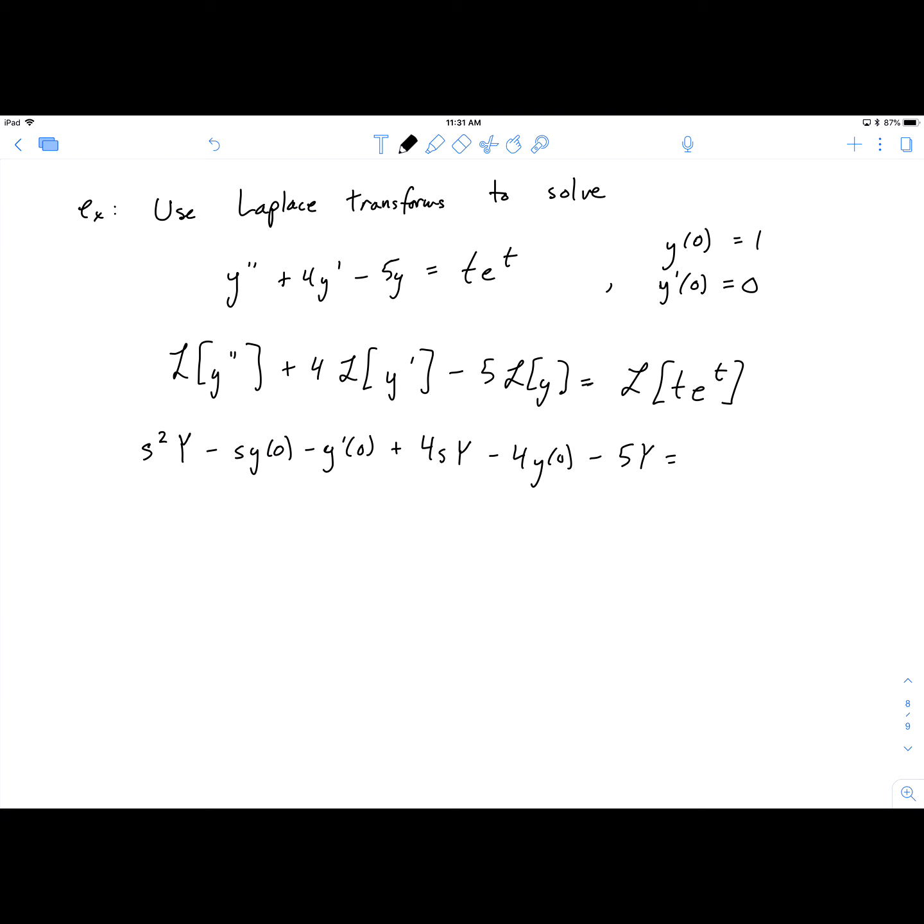So if you think about it the second way, the Laplace transform of t would be 1 over s. And then adding this e^t modifier to it would replace s with s minus a, or 1 in this case. So it would be 1 over (s-1)². Sorry, the Laplace transform of t would be 1 over s². I don't know if I said that.